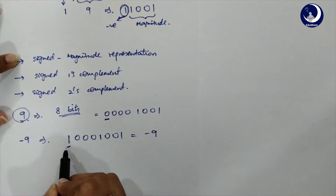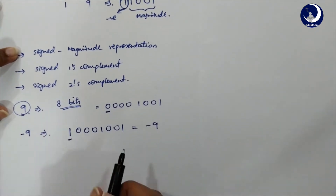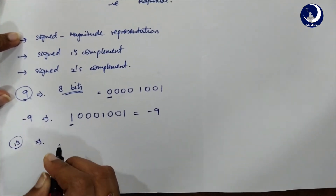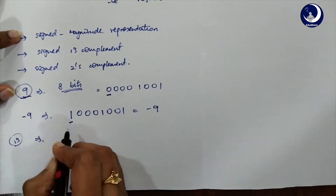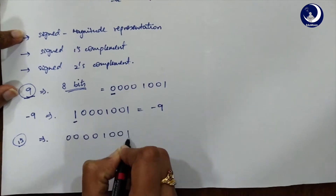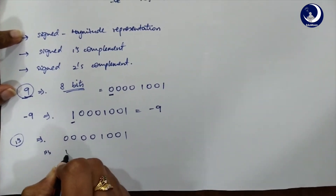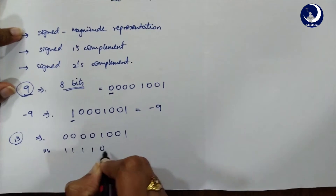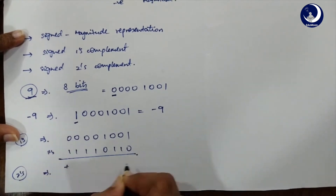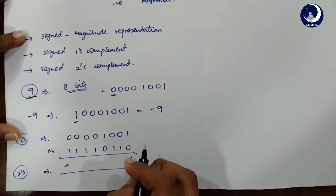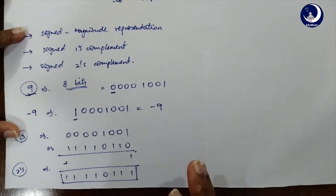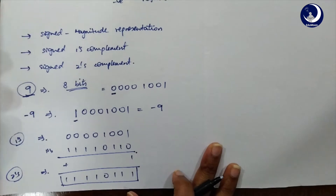For signed one's complement, we take the one's complement of the binary for 9, which is 0 0 0 0 1 0 0 1, and flip all bits to get 1 1 1 1 0 1 1 0. For signed two's complement, we then add 1 to the one's complement result, giving us 1 1 1 1 0 1 1 1. These are the three notations in which we can represent minus 9.